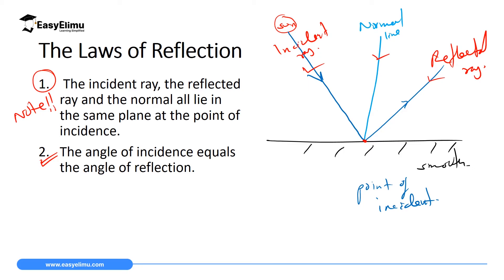But if you observe the first law, then you come to the second law, which states that the angle of incidence is equal to the angle of reflection. Remember, the angle of incidence is measured from the normal to the incident ray, and the angle of reflection is measured from the reflected ray to the normal. So the angle of incidence is equal to the angle of reflection, and the first law states that the incident ray, the normal line, and the reflected ray all lie on the same plane at the point of incidence.